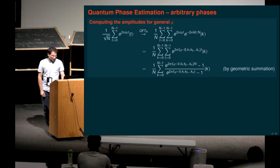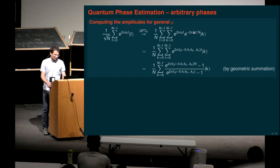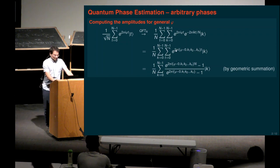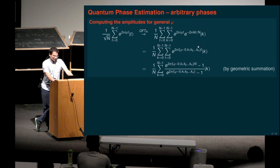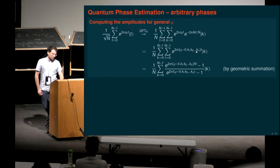Now I interpret these phase factors that the QFT gives — e to the 2 pi i k t over N. I divide k by N and think of k no longer as an integer but as a number between 0 and 1 with n bits, i.e., written as the binary number 0.k1 k2 and so on. This is the estimate — k is the estimate of phi interpreted as a number in 0 to 1. This expression is a geometric series, so I apply the standard summation formula, giving one higher power of the quotient minus 1 divided by the quotient minus 1. These are the exact amplitudes of the different estimates obtained.